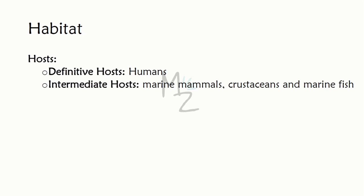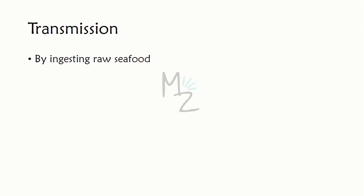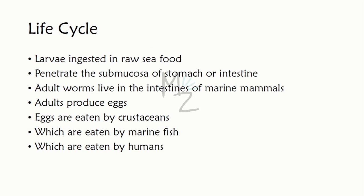Habitat: definitive hosts are human beings; intermediate hosts are marine mammals, crustaceans, and marine fish. Transmission occurs by ingesting raw seafood. Life cycle: larvae ingested in raw seafood can penetrate the submucosa of the stomach or intestine. Adult worms live in intestines of marine mammals such as whales, dolphins, and seals. Eggs produced by adults are eaten by crustaceans, which are eaten by marine fish such as salmon, mackerel, and herring, which are then eaten by humans.